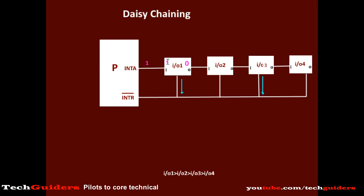Upon receiving a high signal, keeping the output low means this device wishes to get serviced. If this device had not interrupted or does not wish to get serviced, it can propagate the high acknowledgement signal to the next device by keeping the output high. Hence the high acknowledgement signal serially propagates through this device and reaches the next device's input. If that device also had not interrupted, it will also propagate the high acknowledgement signal to the next device by keeping the output high.